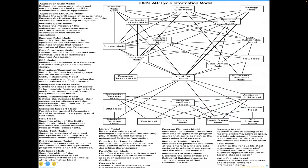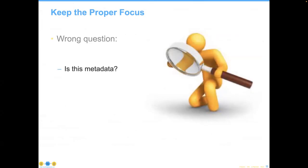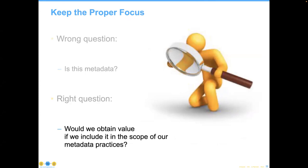IBM did at one point put together what they believed was all the metadata you would ever need into something called the IBM AD Cycle, and there is a website out there that has this stuff. But the more important piece from this definitional section is that when people understand metadata, they start running around their organization looking at stuff and saying, is this metadata? The answer to that question is always: it could be metadata. So the real question to ask is not, is this metadata? But would we obtain value if we include this particular metadata within the scope of our metadata management practices? Because if you just collect metadata about everything and recognize that 80% of your data is redundant, obsolete, or trivial, you will be doing a lot of work for not a lot of value.